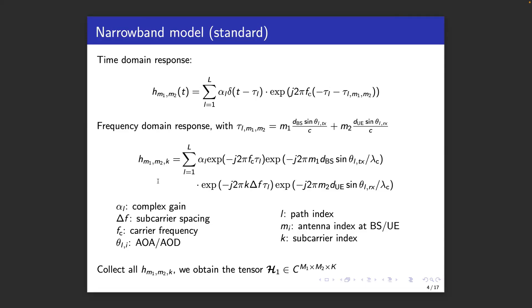This allows us to express the channel in the frequency domain with subcarrier index k, where we see the channel gains alpha, phase rotations due to the delay of path L, phase rotations across the base station array, phase rotations across the subcarriers, and phase rotations across the user array.